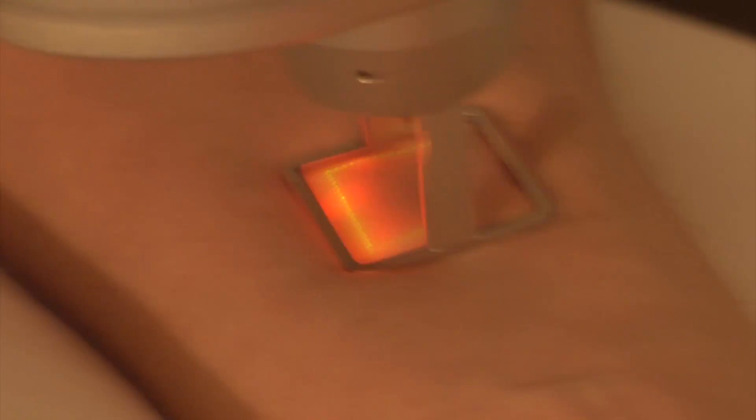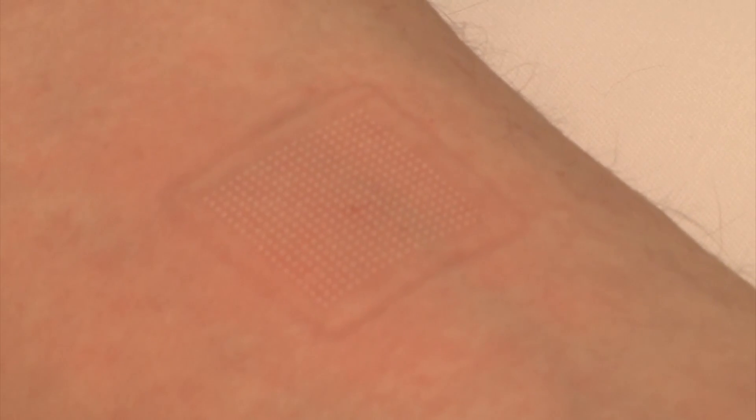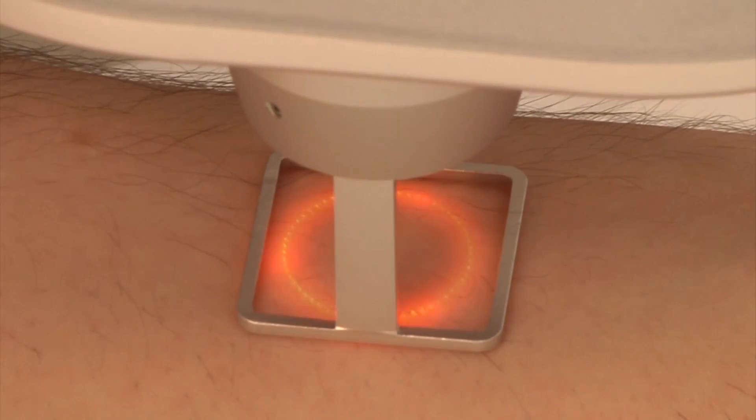I'd like to just provide a brief demonstration of how the scanner works. As you can see, the red lights that are flashing will illuminate the scan area. By depressing the foot pedal, we activate the scanner, and it will paint the microthermal zones sequentially until it completes the scan field. As you can see, each microthermal zone is very tiny, and the skin in between the microthermal zones is completely spared and untreated. I can also demonstrate to you the geometry of a circle.